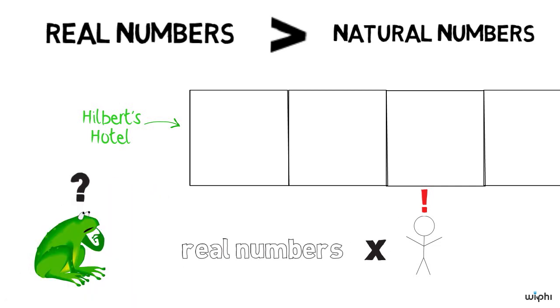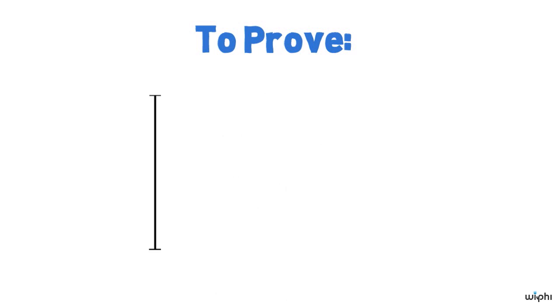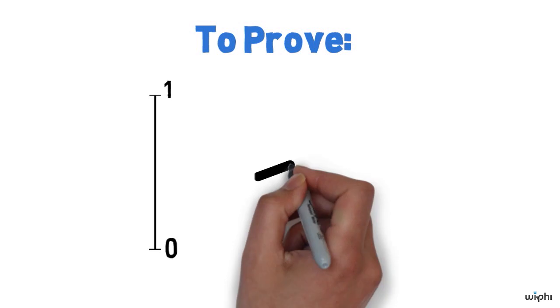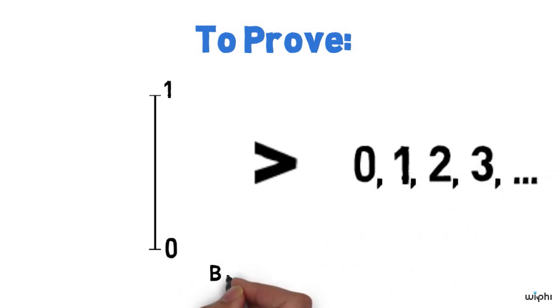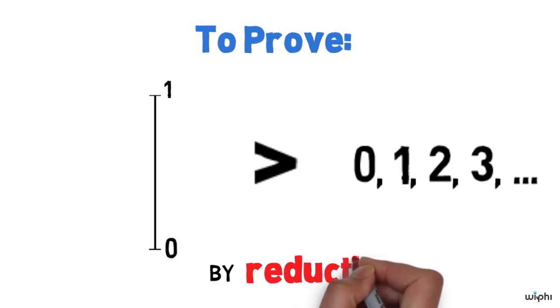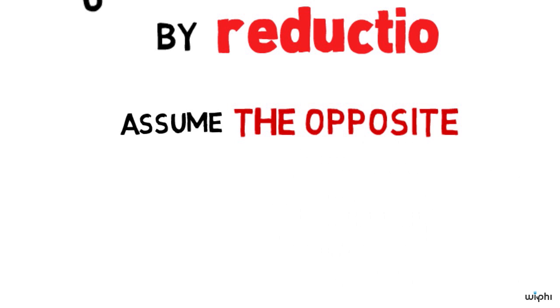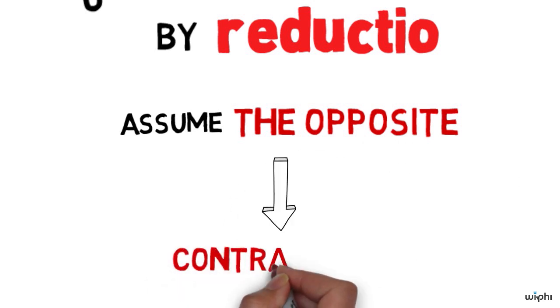So here's how to do it. What we're going to prove is that there are more real numbers between 0 and 1 than there are natural numbers. And the way we're going to prove it is by reductio — we're going to assume the opposite of what we want to prove and derive a contradiction from that assumption.